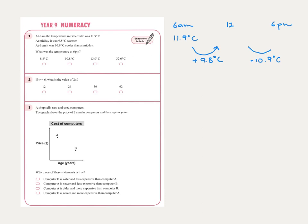Using a calculator: 11.9 plus 9.8 — because it was warmer — gives us 21.7. Then it was cooler by 10.9, so we take away 10.9, and the final answer is 10.8 degrees Celsius. You then shade one bubble for that answer.